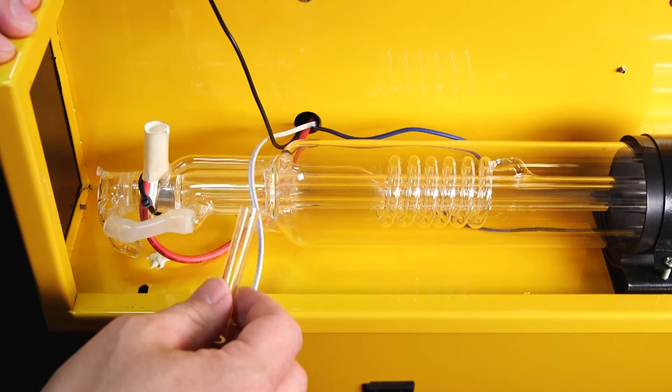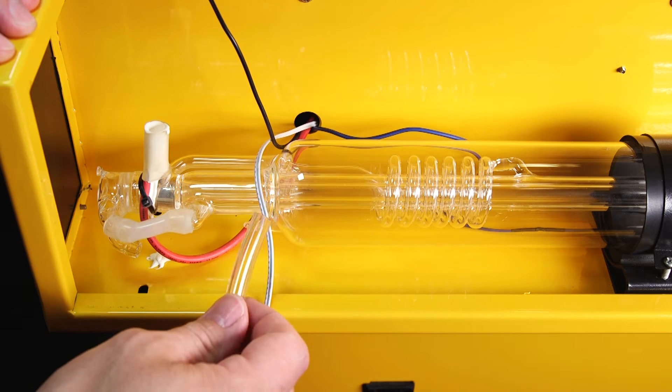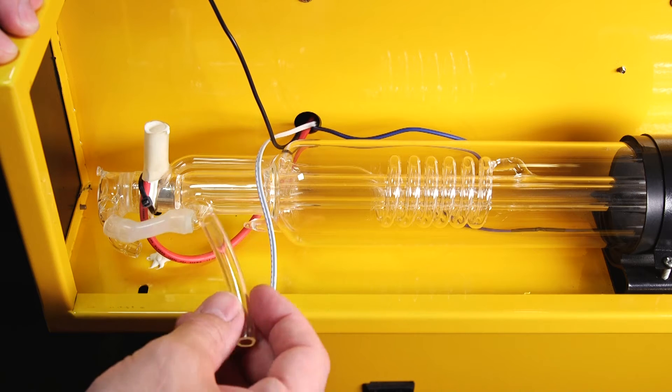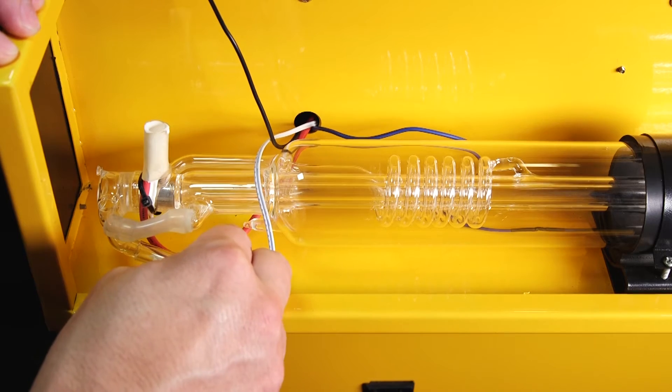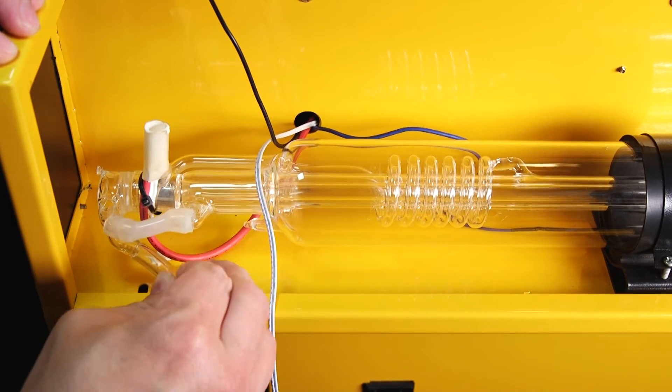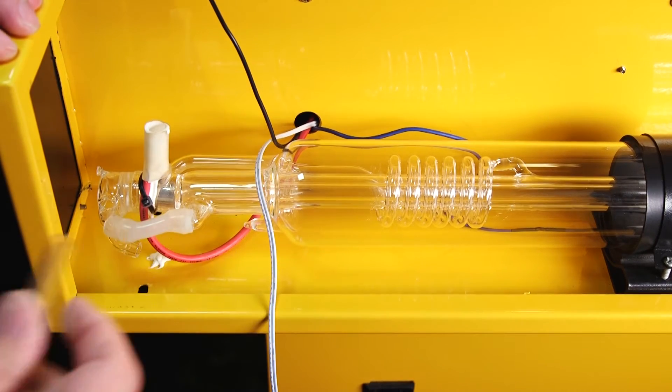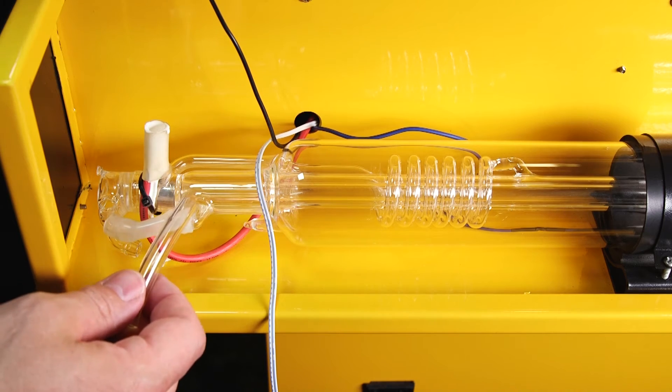Now as you can see this vinyl tubing is fairly tight and it's fairly stiff material and it does not want to easily fit onto the inlet. So I'm going to show you a little hack here that makes the vinyl tubing go on much easier.